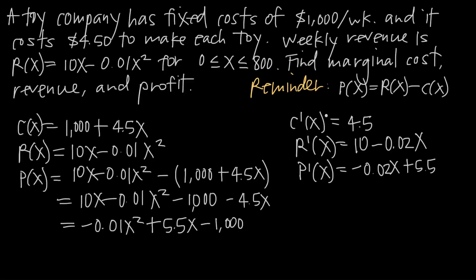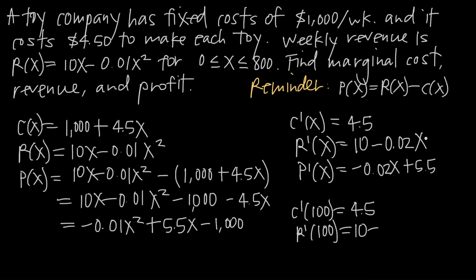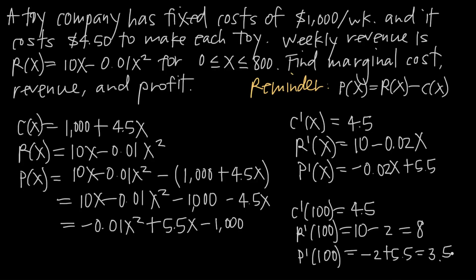If we're asked to find marginal cost, revenue, and profit when the company makes 100 units, we plug x = 100 into each function. C'(100) = 4.5 — there's no variable on the right-hand side, so it remains 4.5. R'(100) = 10 − 0.02(100) = 10 − 2 = 8. P'(100) = −0.02(100) + 5.5 = −2 + 5.5 = 3.5.